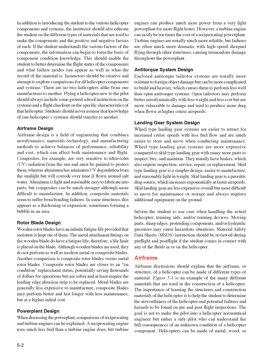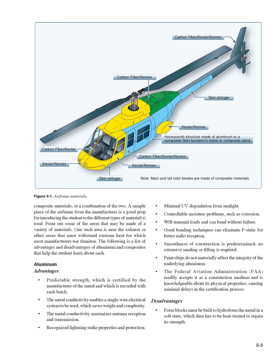The airframe discussion should explain that the airframe, or structure, of a helicopter can be made of different types of material. The importance of learning the structures and construction materials of the helicopter is to help the student to determine the airworthiness of the helicopter and potential failures and hazards to be found on pre- and post-flight inspections. The goal is not to make the pilot into a helicopter aeronautical engineer but rather a safe pilot who can understand the full consequences of an unknown condition of a helicopter component. Helicopters can be made of metal, wood, or composite materials, or a combination. One area near the exhaust or other areas that must withstand extreme heat is where most manufacturers use titanium. The following is a list of advantages and disadvantages of aluminum and composites that help the student learn about each.